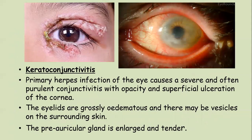Primary herpes infection of the eye causes severe conjunctivitis with opacity and superficial ulceration of the cornea. Grouped vesicles appear on the upper lid and gradually enter the sclera and cornea causing heaviness. The eyes are grossly edematous and there may be vesicles on the surrounding skin. The pre-auricular glands are enlarged and tender.